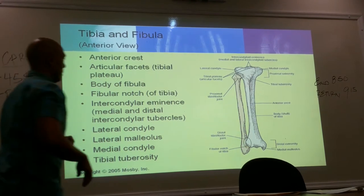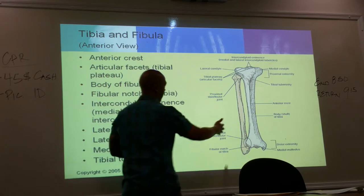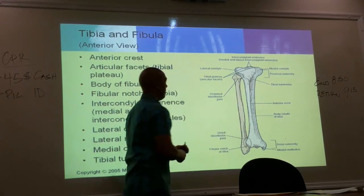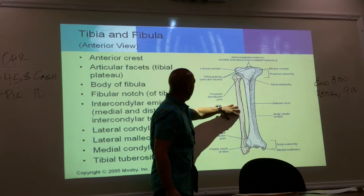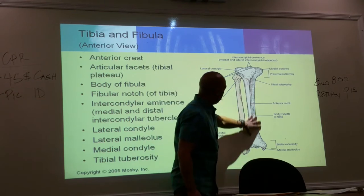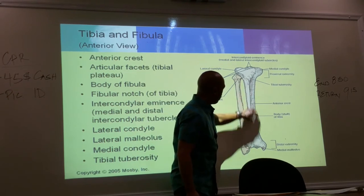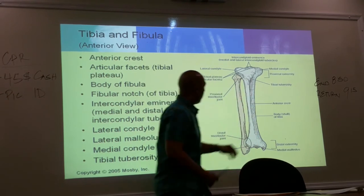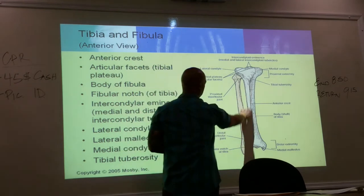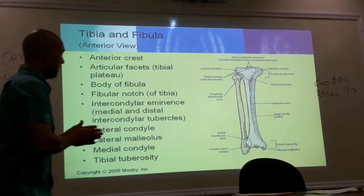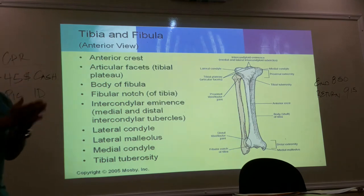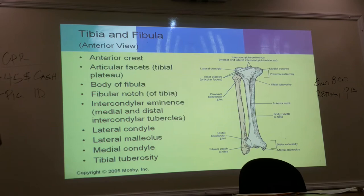The length of the fibula and tibia is the body or shaft. What's interesting is you have a very sharp edge that's anterior to the tibia, known as the crest — what we know as the shin bone. So that's your anterior crest.